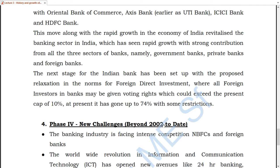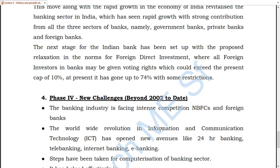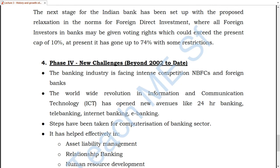In 2002, the next phase began. Indian banking faced a major revolution with Information and Communication Technology, ICT. This worldwide revolution meant that our banking system had to computerize. Banks increased in number, competition grew, and they had to improve their working. Because of ICT and computerization, many new changes came — now 24-hour banking, telebanking, internet banking, and e-banking facilities have been introduced.